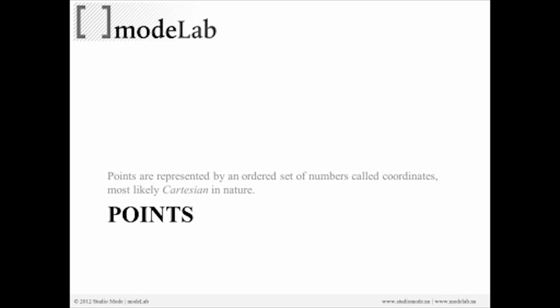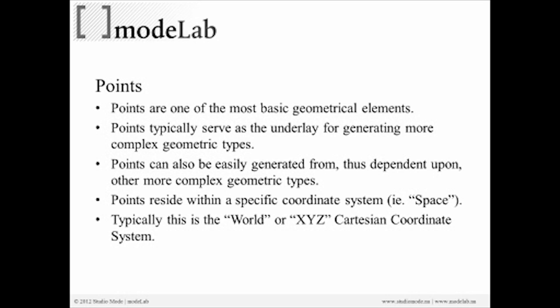Just as a quick refresher: points are represented by an ordered set of numbers called coordinates, most likely Cartesian in nature. If we're familiar with modeling in Rhino, we know that we can create a point by either clicking in the viewport or defining its XYZ coordinates. Points are a basic geometrical element that we typically use as an underlay for generating more complex types. They can also be extracted from other more complex types — for instance, you can get points on a surface. All points reside within a specific coordinate system, usually the world XYZ coordinate space.